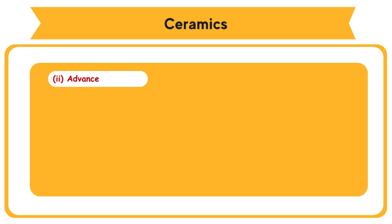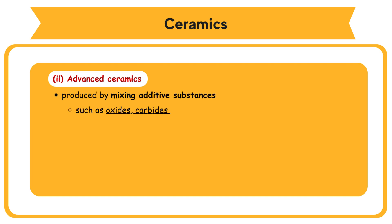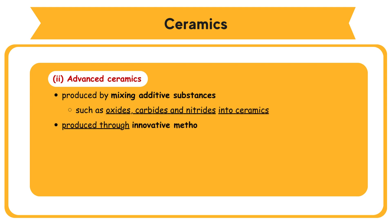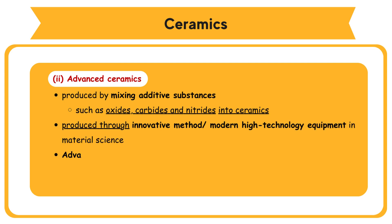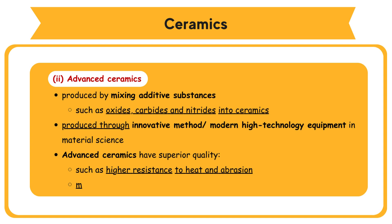Advanced ceramics is produced by mixing additive substances, such as oxides, carbides, and nitrides, into ceramics. Ceramics produced through innovative methods or modern high-technology equipment in material science. Advanced ceramics have superior quality, such as higher resistance to heat and abrasion, more chemically inert, and have superconductivity properties.